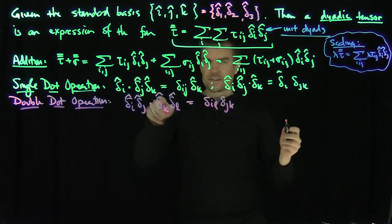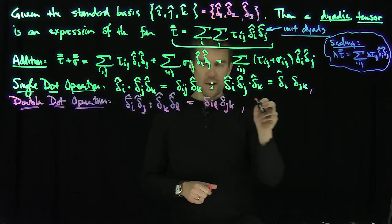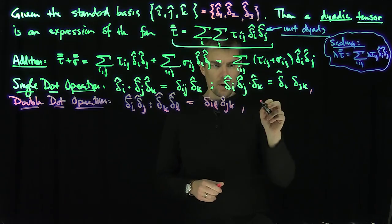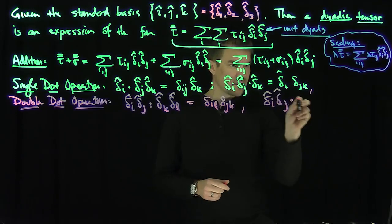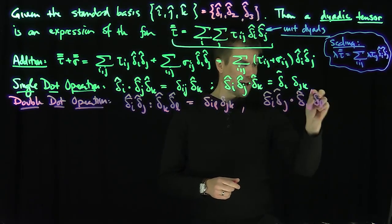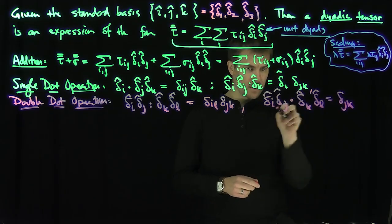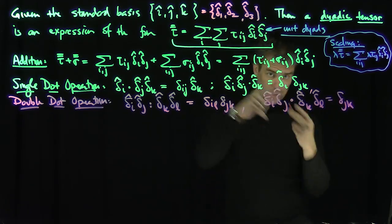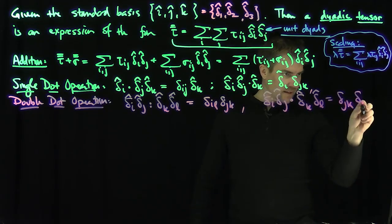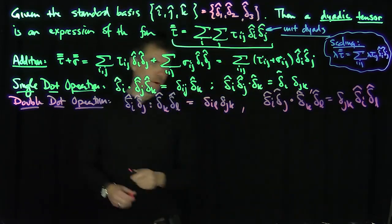We can also do the same thing with a single dot between two dyadic tensors. If I had (delta-i delta-j) single-dot (delta-k delta-l), that would output delta_jk for the innermost contraction, and then delta-i-hat delta-l-hat. So the single dot of two dyadic tensors outputs another dyadic tensor.